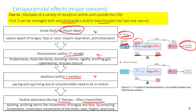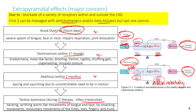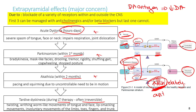In Parkinson's disease, dopaminergic neurons are reduced, leaving relatively more acetylcholine, which disturbs movement. With antipsychotics, dopamine antagonism mimics this imbalance. The strategy to treat EPS is to block the relatively high acetylcholine levels using anticholinergics. Beta blockers help reduce the tremors associated with EPS.